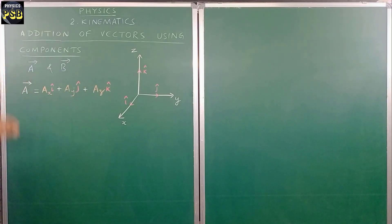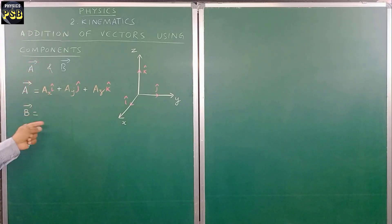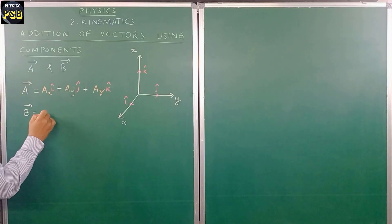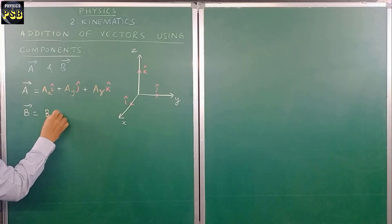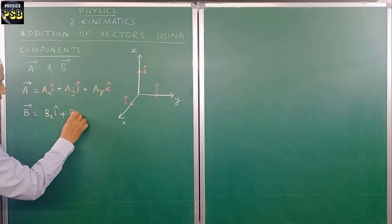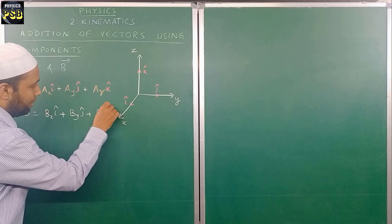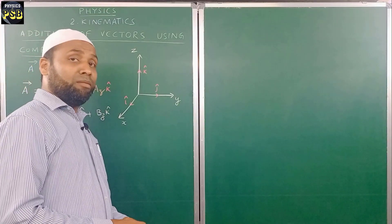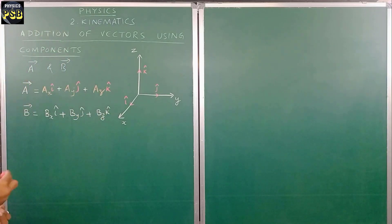So vector A equals ax·i-cap plus ay·j-cap plus az·k-cap — these are the three components of vector A. Now I will follow the same method for vector B. Using its components, vector B can be written as bx·i-cap plus by·j-cap plus bz·k-cap. These are the components of vector B. Now using this component method I am going to add or subtract these two vectors.